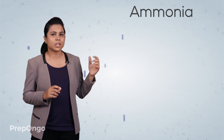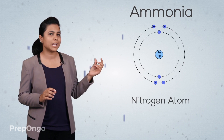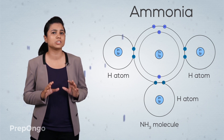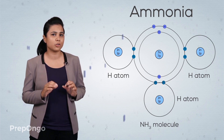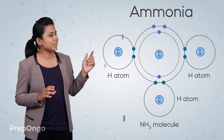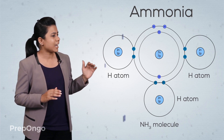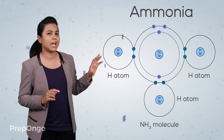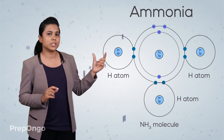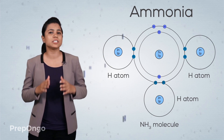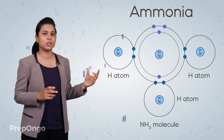Another example that follows a similar principle is ammonia. Ammonia is composed of one nitrogen atom and three hydrogen atoms. Nitrogen needs to share three electrons to gain a noble gas electronic configuration, so it shares one electron each with the three hydrogen atoms. Here you can see that nitrogen has shared one electron each with the three hydrogen atoms, balancing all four atoms to create an ammonia molecule.